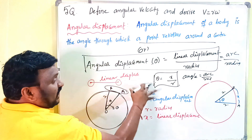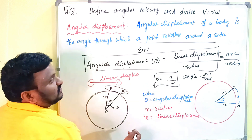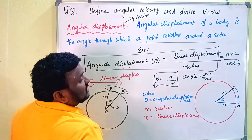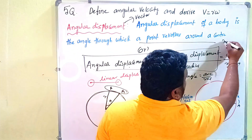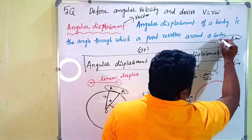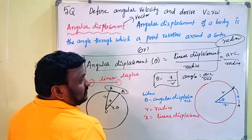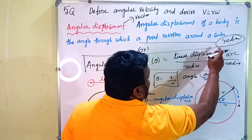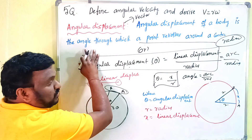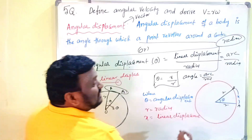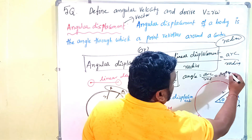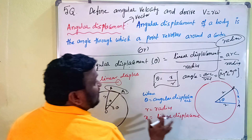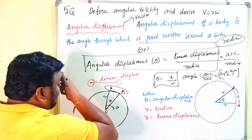Angular displacement is a vector quantity and is measured in terms of radians. Its unit is radian, and it is also a dimensionless quantity. So this is simply about angular displacement.